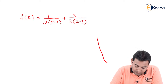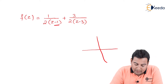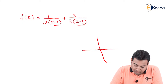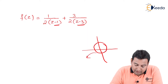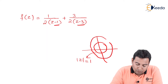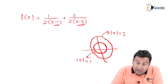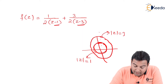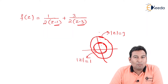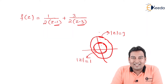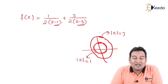If the problem were to expand about origin or z equal to zero, the singular points are z equal to one and z equal to three, meaning circles of radius one and radius three. This gives three regions: case one — mod z less than one; case two — between one and three; case three — mod z greater than three. But there is a twist: the problem asks to expand about z equal to four, or in powers of z minus four. So these cases will be discarded for this problem.